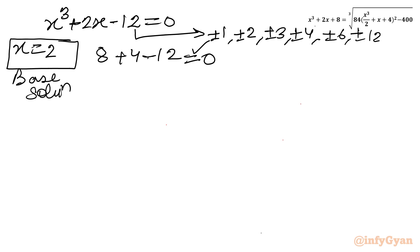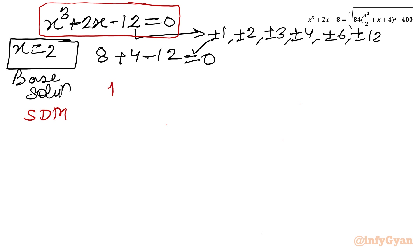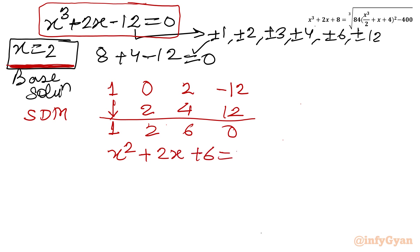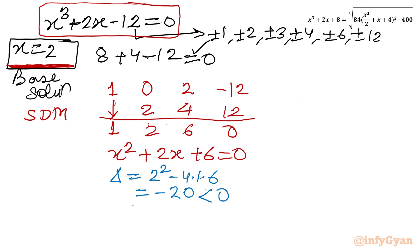Now I have to find out the remaining two solutions using synthetic division again. Coefficients of this cubic equation: 1, 0, 2, −12, with root 2. Leading coefficient 1; 1×2 = 2; 2×2 = 4, so 6; 6×2 = 12, remainder 0. The quadratic is x² + 2x + 6 = 0. Discriminant: 2² − 4(1)(6) = 4 − 24 = −20, negative. Complex solutions — we reject.